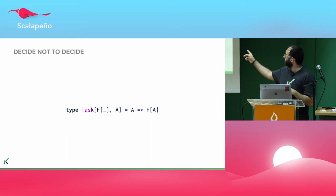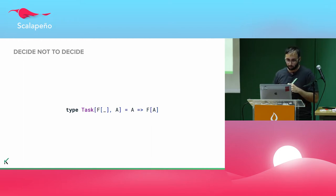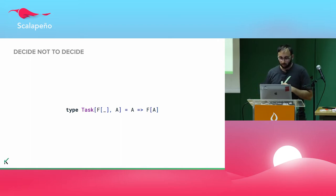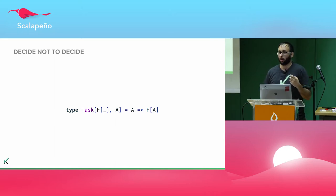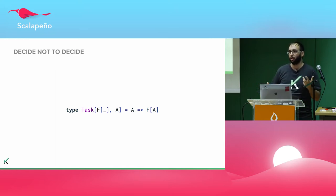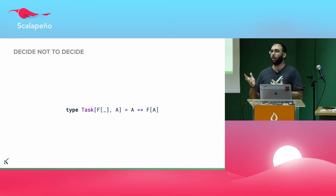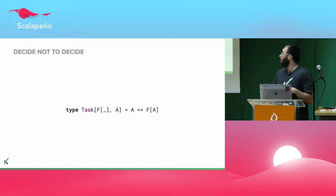We introduce another type parameter F which has a hole in it — that's where our result is going to go. We don't know anything about this F or about A right now, and that's actually a good thing. It will make us think about exactly what we need of those F and A in order to make a JSON transformation library work.